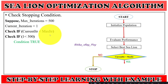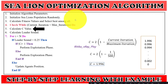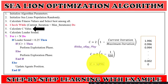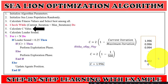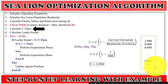We then check the stopping condition — for example, current iteration 1 and maximum iteration 500, condition is true so we move to the next step. Next, we calculate the value for parameter C, used in the sea lion hunting phase. With current iteration 1 and maximum iteration 500, C equals 1.996. For iteration 2 it is 0.996, for iteration 499 it is 0.002, and for the last iteration it is 0. The value of C decreases linearly from 2 to 0 over the course of iterations.